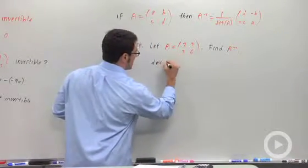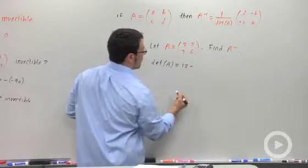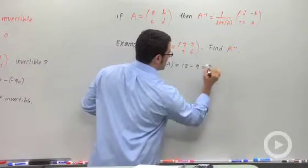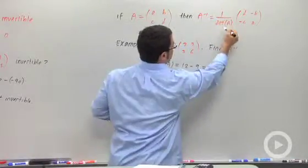But first we calculate determinant of A. We get 2 times 6, 12, minus 3 times 3, 9. So that's 3. And so this part of the formula is going to be 1 over 3, one third.